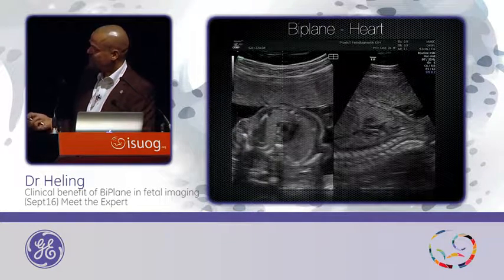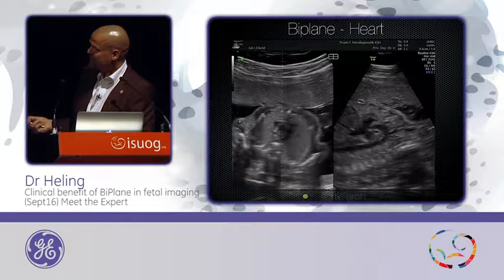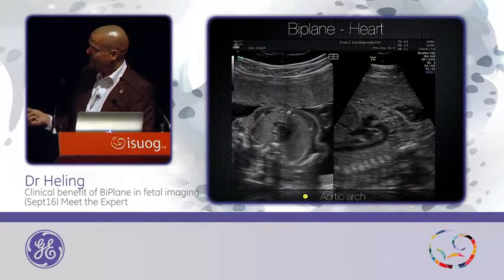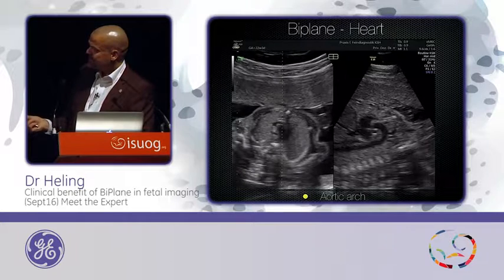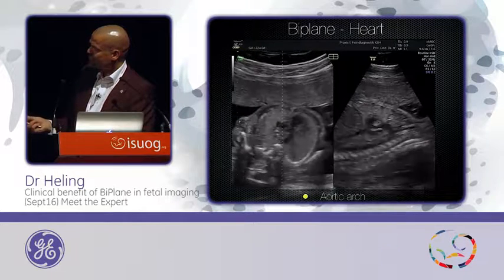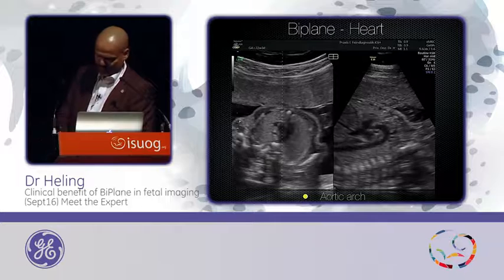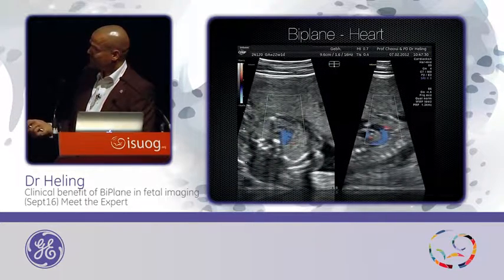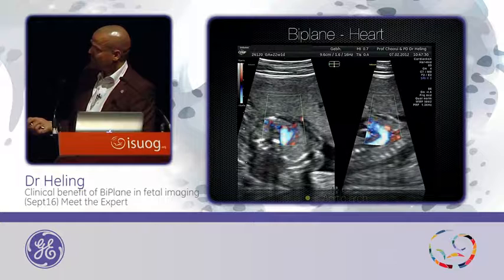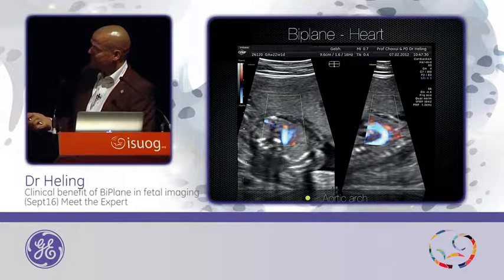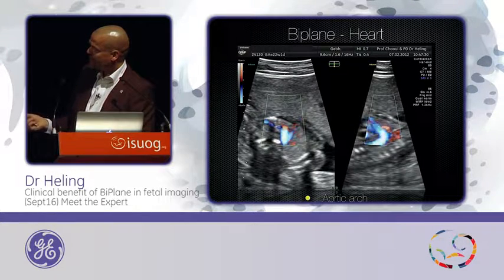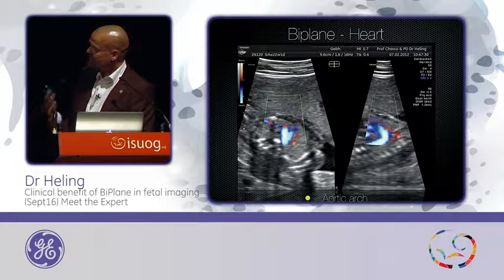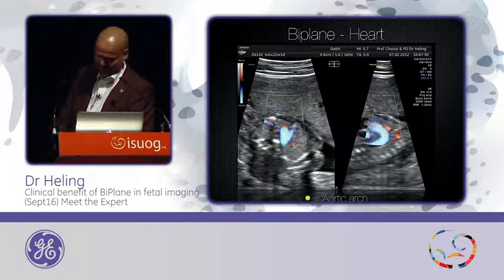I showed you the image before — I put the line through the aortic arch and directly you get the aortic arch. This is a standard approach to the three-vessel trachea view. The baby is lying on the back, and it works also with color. I put on color or HD flow, put the line through, and directly you get a good image of the aortic arch. You see the vessels going up to the head, so you have a clear image.